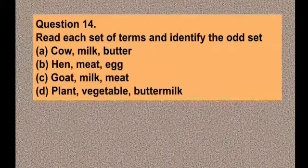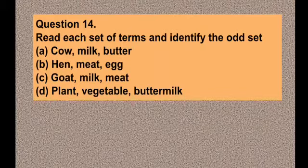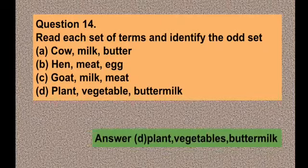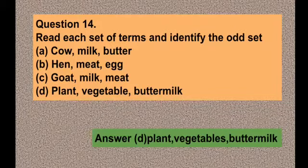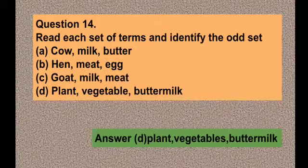Question number fourteen: Read each set of terms and identify the odd set. Option A cow, milk, butter; option B hen, meat, egg; option C goat, milk, meat; option D plant, vegetable, buttermilk. The correct answer is option D — plant, vegetable, and buttermilk. Cow gives milk and we make butter from it; hen gives meat and eggs; goat gives milk and meat; but a plant gives vegetables and we cannot make buttermilk from vegetables. That is why option D is correct.